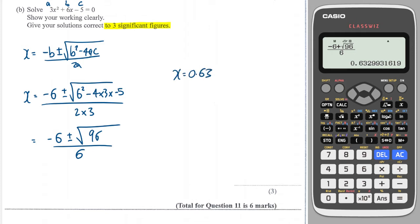And then I'm going to go back, and I'm going to change that to a minus, and that is going to give me minus 2.63. Perfect, and that's to three significant figures.